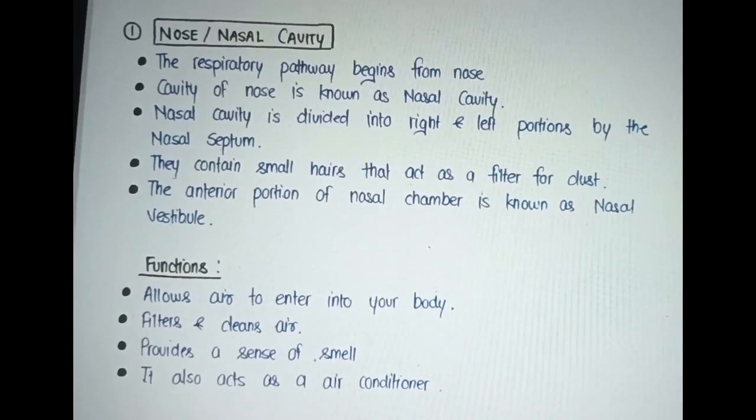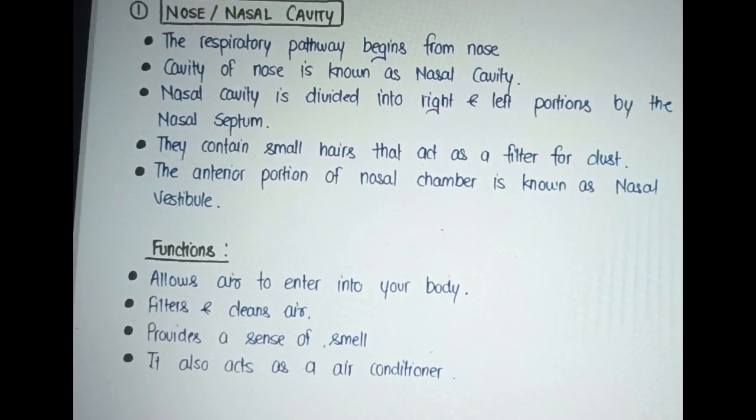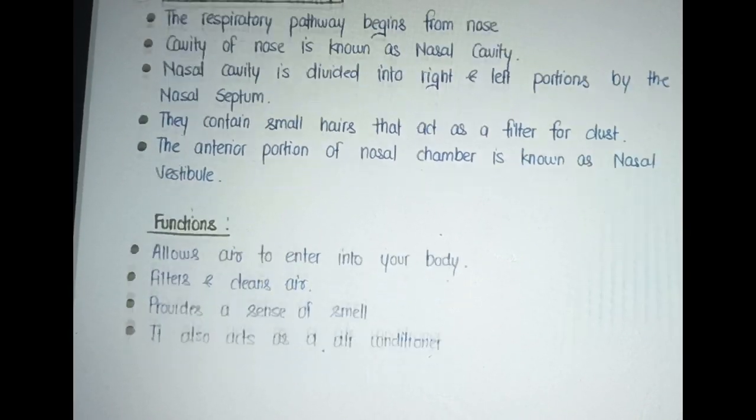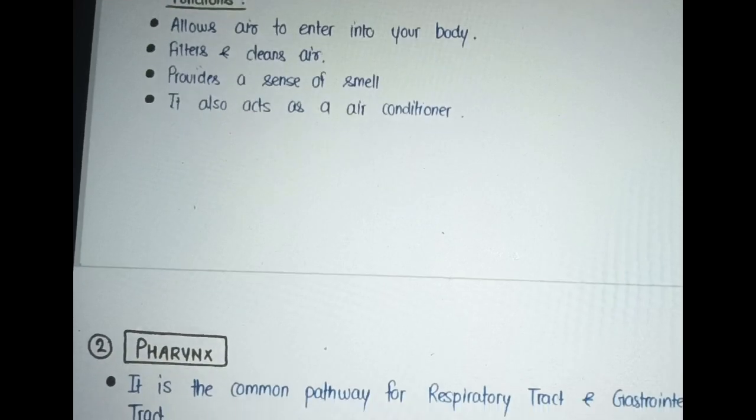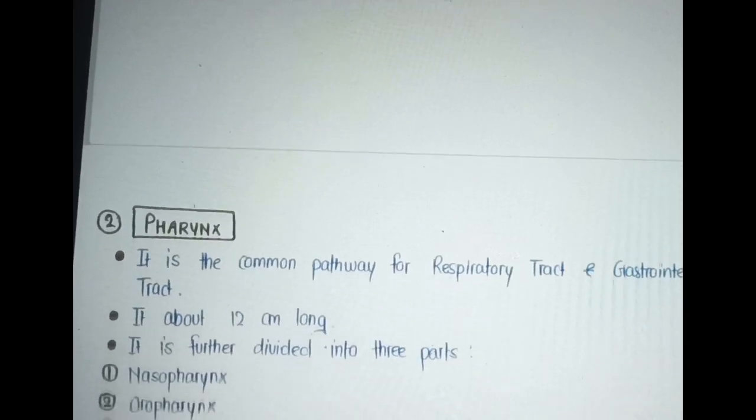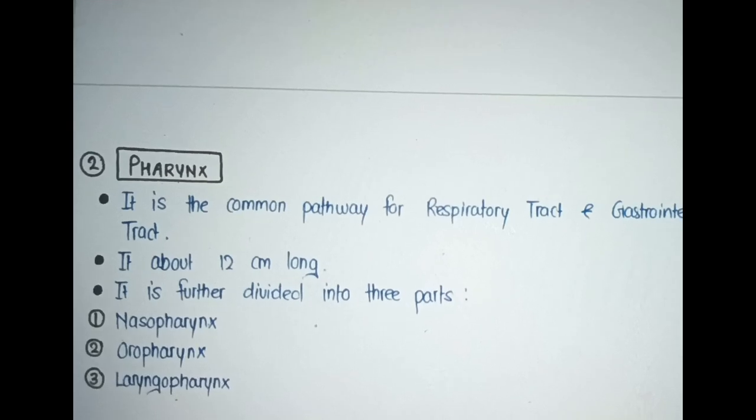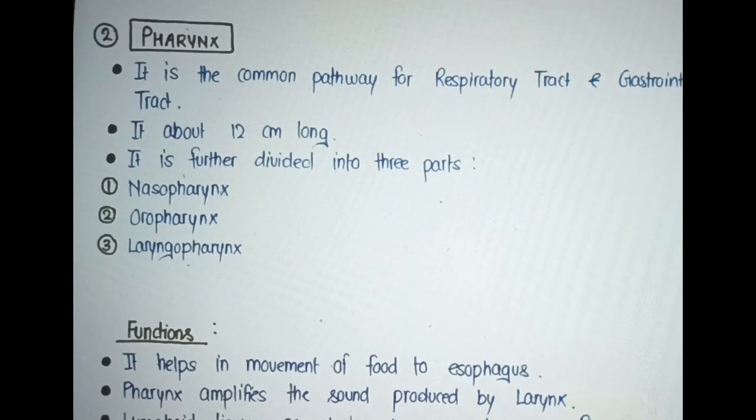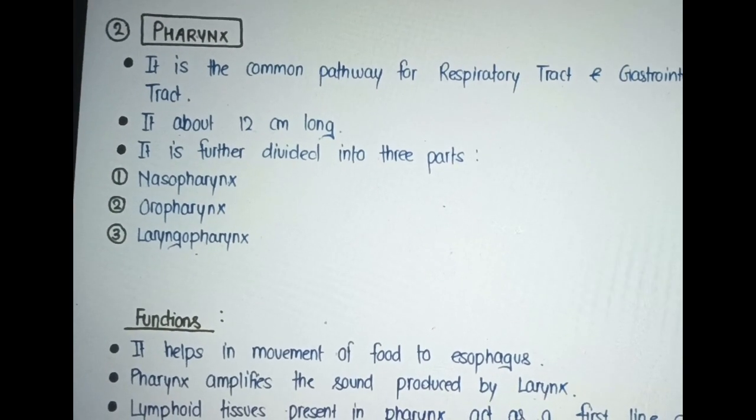Nose and nasal cavity. The respiratory pathway begins from the nose. The cavity of the nose is known as the nasal cavity. The nasal cavity is divided into right and left portions by the nasal septum. They contain small hairs that act as a filter for dust. The anterior portion of the nasal chamber is known as the nasal vestibule.